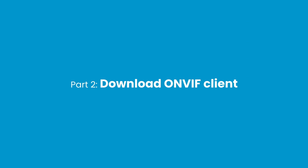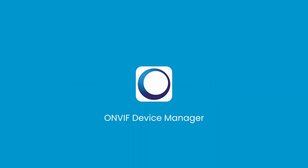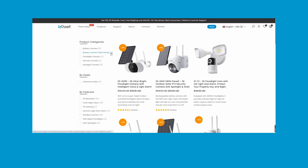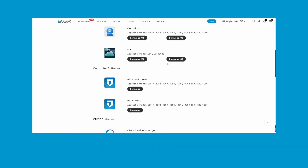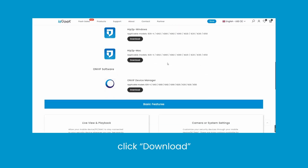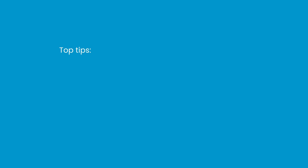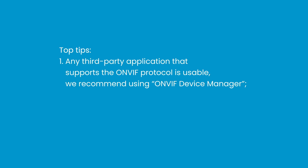Part 2: Download OnViv Client. You should download the OnViv Client OnViv Device Manager. Go to IE Geek official online shop, click support, click app download, find OnViv Device Manager, and click download. Top tip: any third-party application that supports the OnViv protocol is usable, but we recommend using OnViv Device Manager.